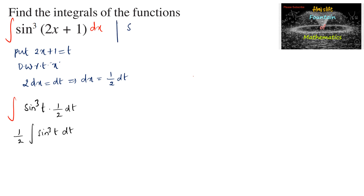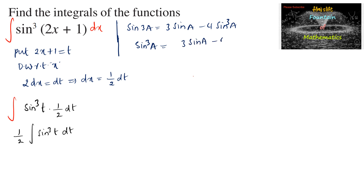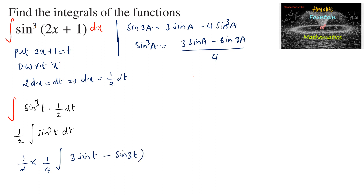We know the formula sin3a = 3sina - 4sin³a, so from here we can write sin³a = (3sina - sin3a) / 4. Substituting, the integral becomes 1/2 times 1/4, that is 1/8, times the integral of (3sin t - sin 3t) dt.